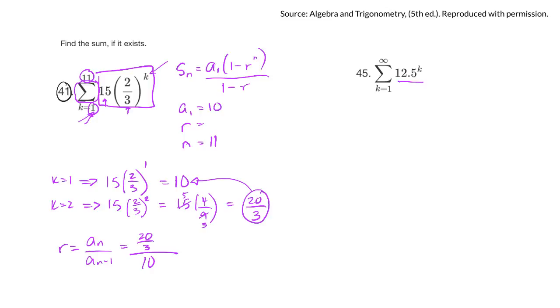To simplify, 20/3 divided by 10, or 20/3 times 1/10. 10 goes into 20 twice, so it's going to be 2/3. And that's what we thought. The ratio is 2/3.